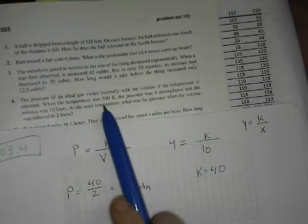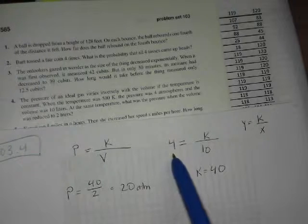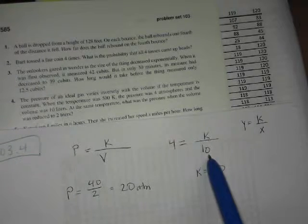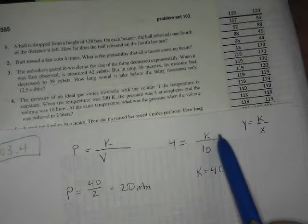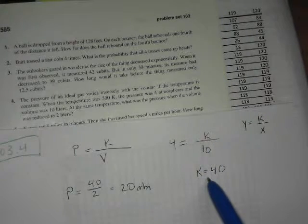When the temperature was 500, the pressure was 4, so I put that in for pressure, and the volume was 10, I put that in for volume, and then I want to solve for k. If you multiply both sides by 10, you get k is 40.